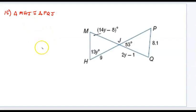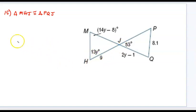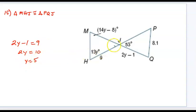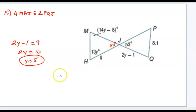For number 15, same idea. We look for a pair of corresponding sides — for example JQ is congruent to JH. Setting JQ, which is 2Y minus 1, equal to JH, which is 9, gives us 2Y equals 10, so Y equals 5. You could also note that this angle is 53 degrees because they are vertical angles, and let all three angles add up to 180 to solve for Y that way. Either method gives the same answer.